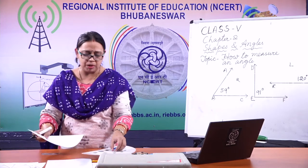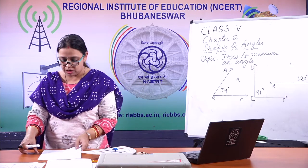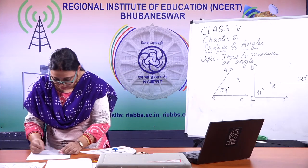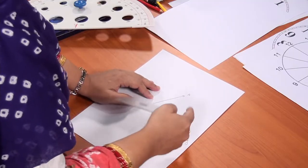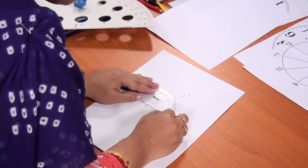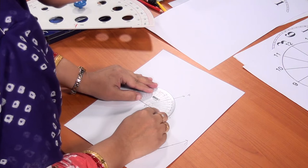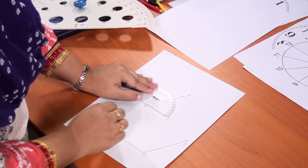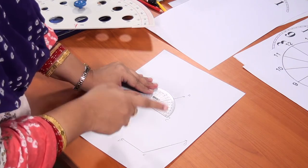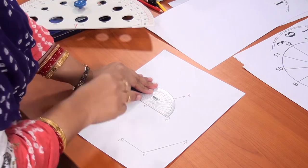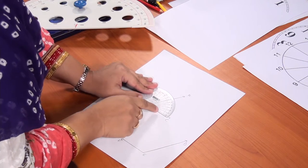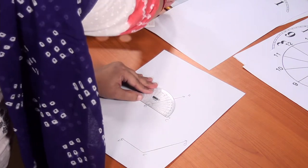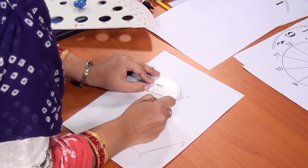Some of you might be thinking: you did it on the board, but how can we do it on our copy? I am showing you that as well. Here I have drawn an acute angle ABC. Adjust the vertex of the protractor with the vertex of the angle. Which scale do we read — inner or outer? Obviously the inner scale, because the angle opening is to the right. Counting: 0, 10, 20, 30, 40, 50, 60. This angle is 60 degrees.